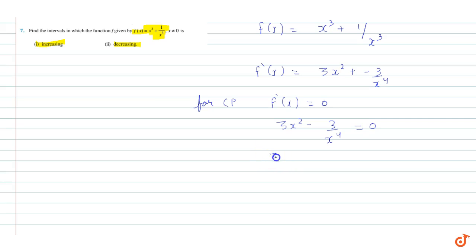If we take 3 common, we have 3 common. So, x square minus 1 upon x raised to power 4 is equal to 0. So, x square is equal to 1 upon x raised to power 4.